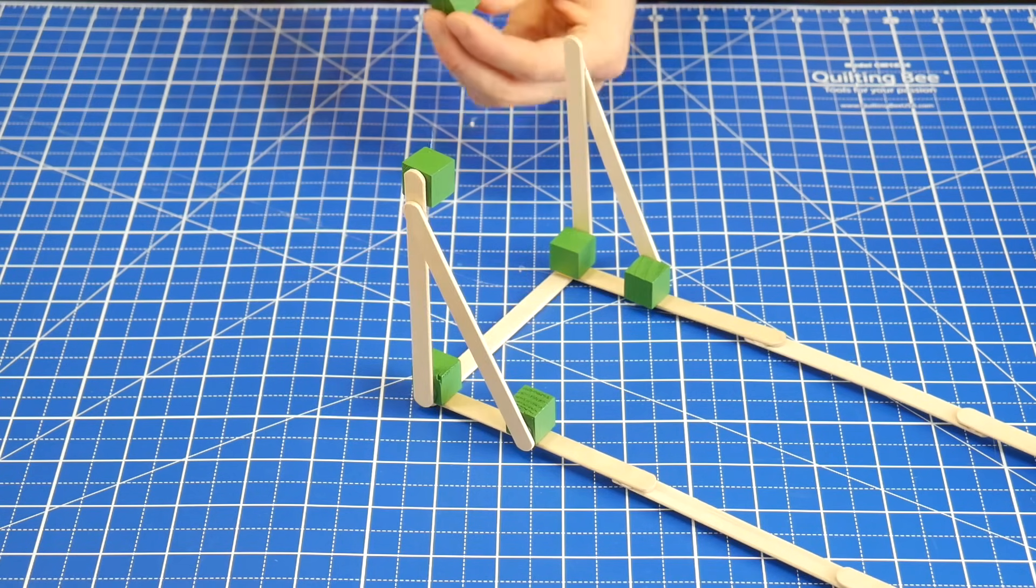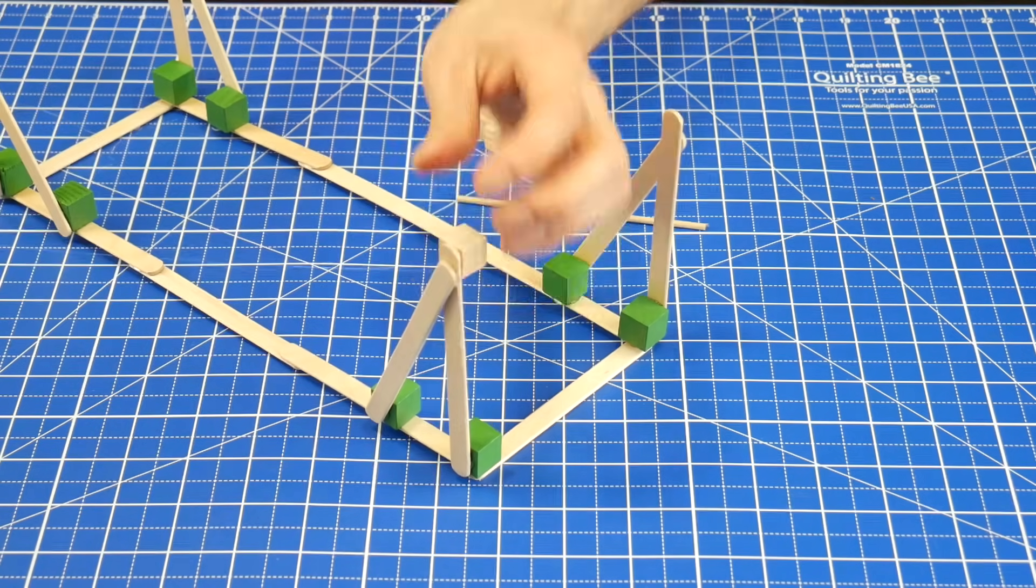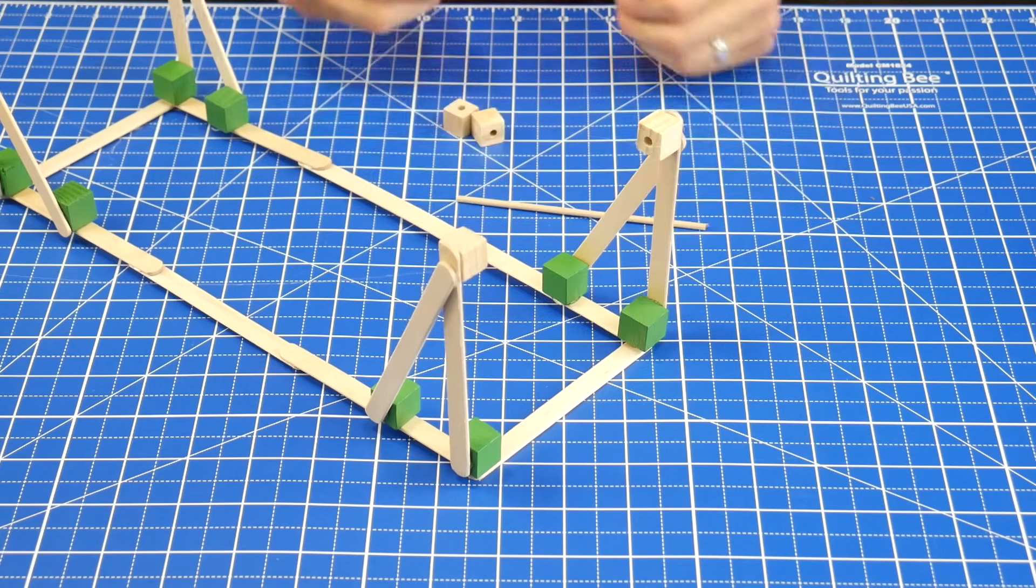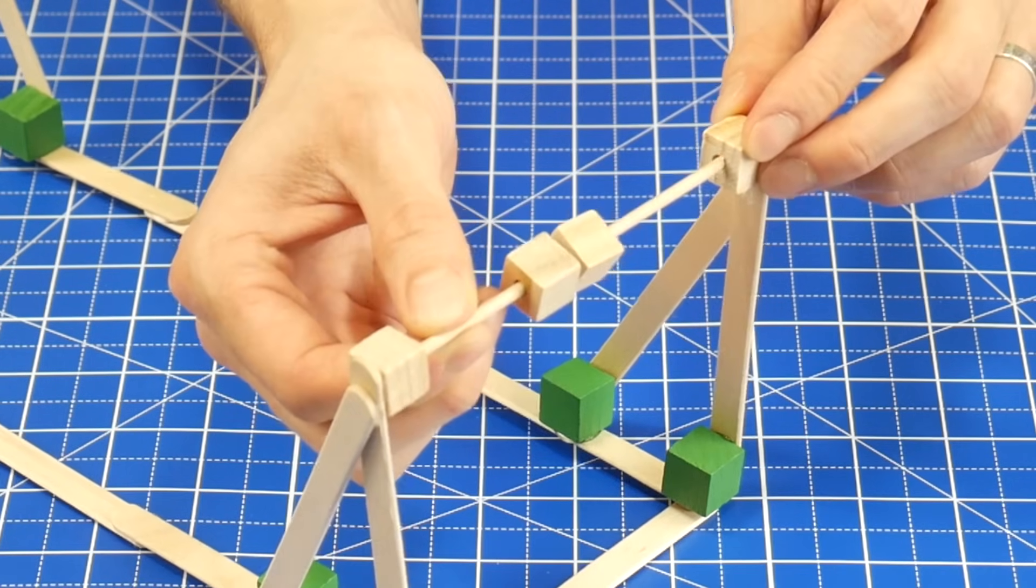On one side, connect the support structures with two more craft cubes and a stick. On the other end, create a hinge using these four cubes with holes and a 1⅛ inch dowel that's been cut to be about as long as a craft stick.